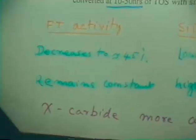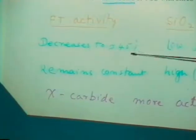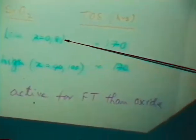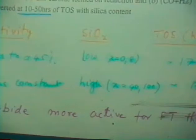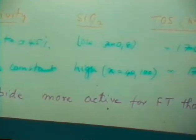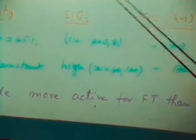Now, the activity at 170 hours seems to decrease down to 45% for those catalysts which have low SiO2 where X equals 0 or 8. On the other hand, for catalysts which have got higher SiO2 content, which is 40 to 100, activity remains constant with higher time on stream values. So these factors indicate that chi-carbide is more active for FT synthesis than oxide phase.